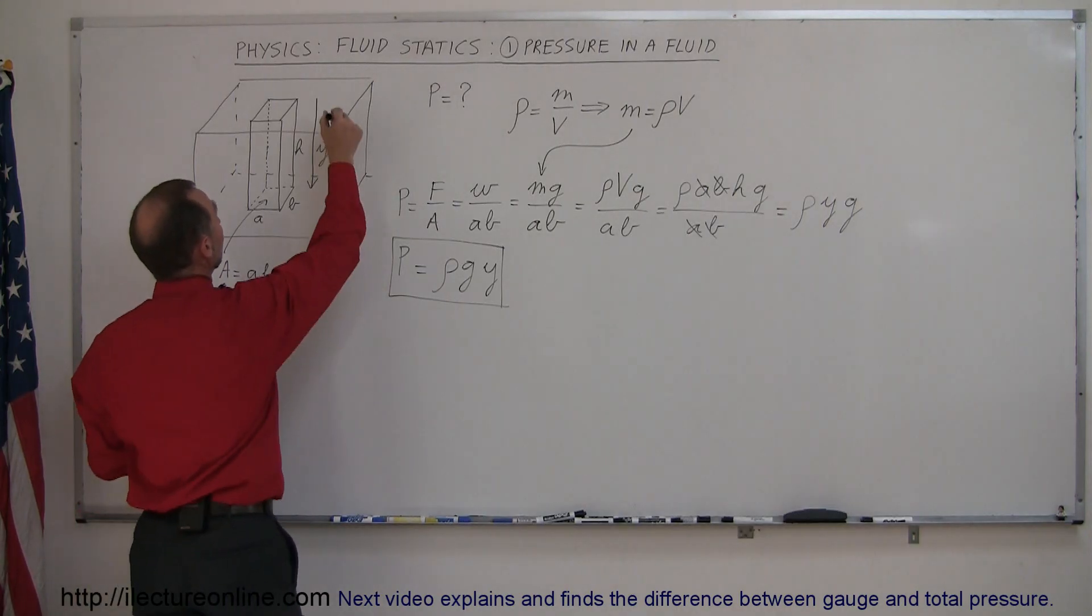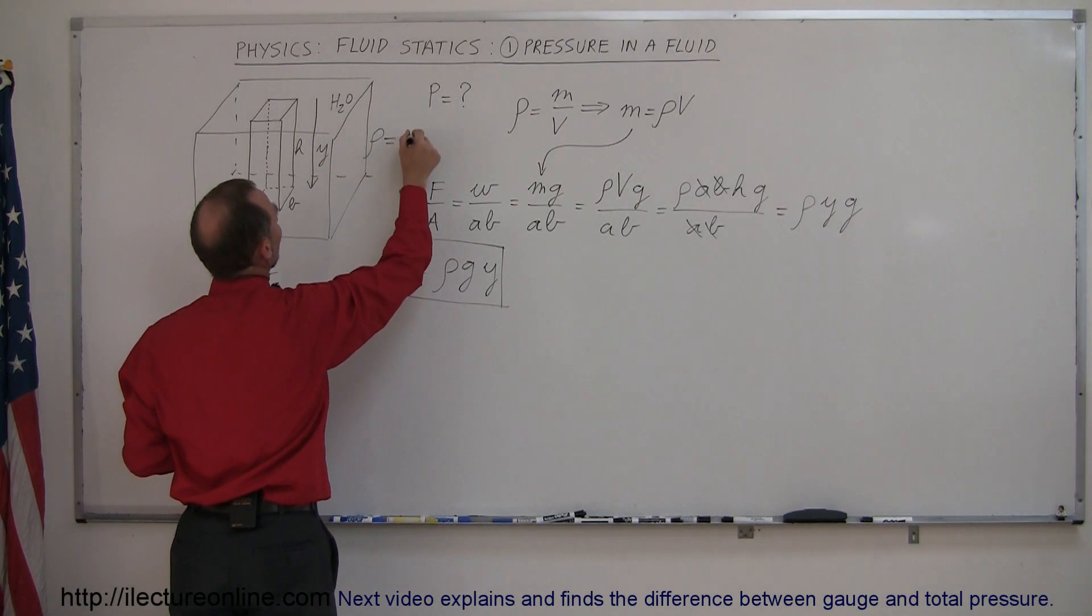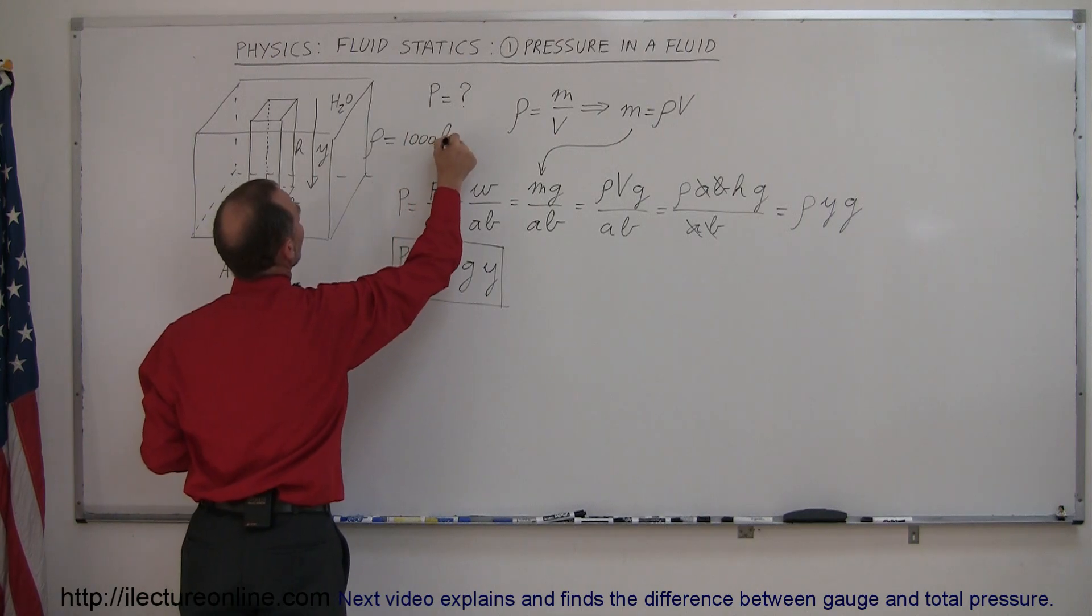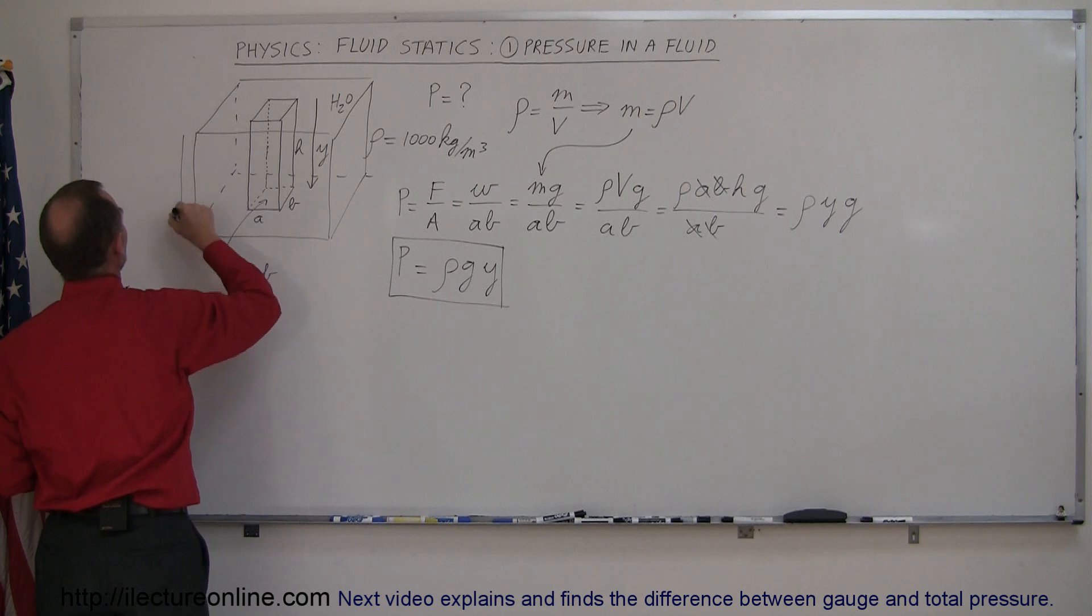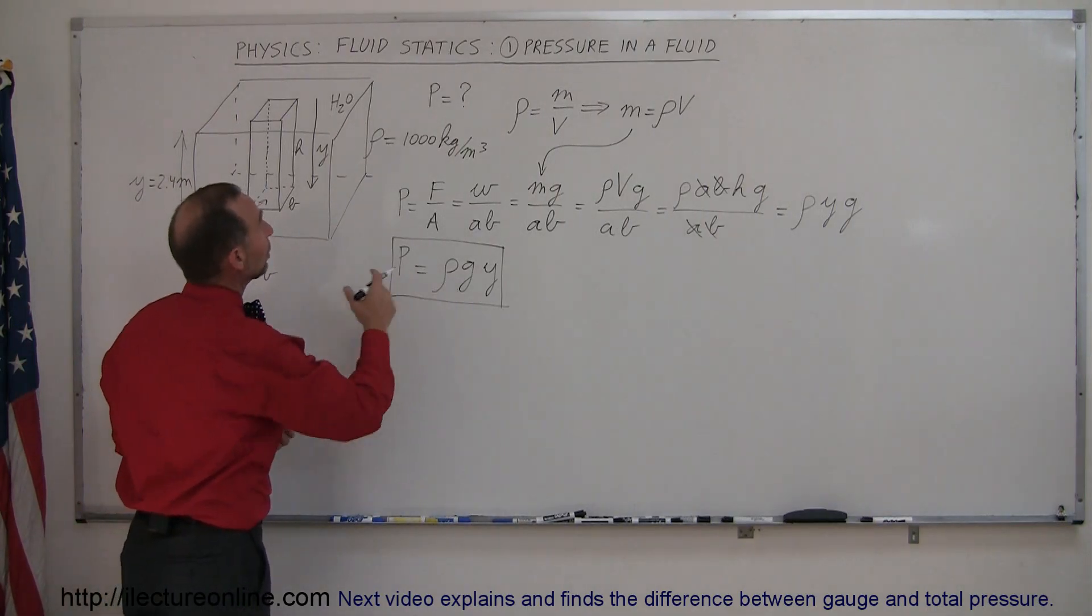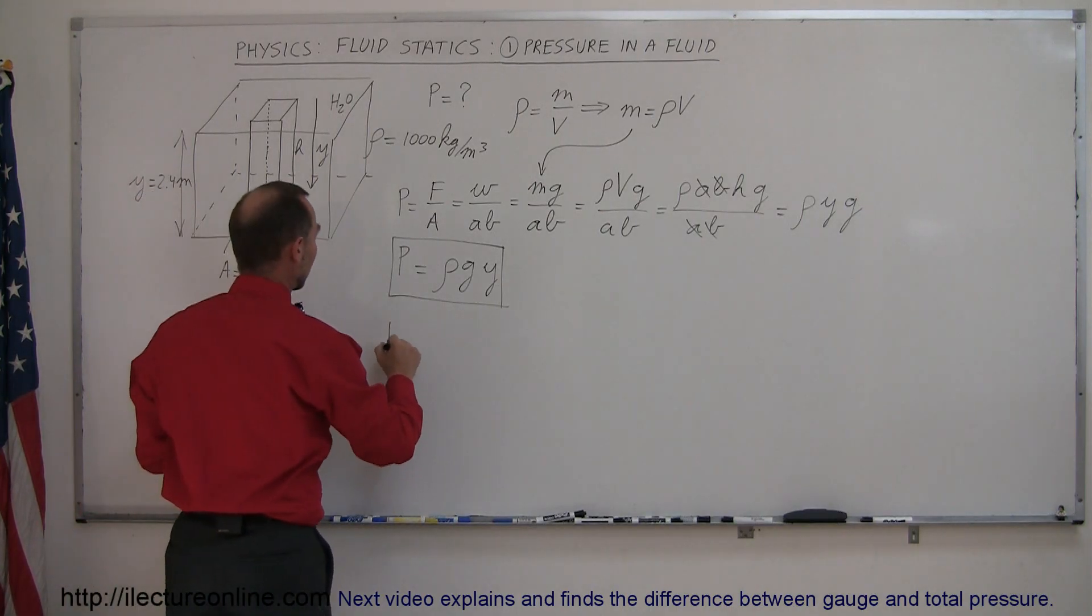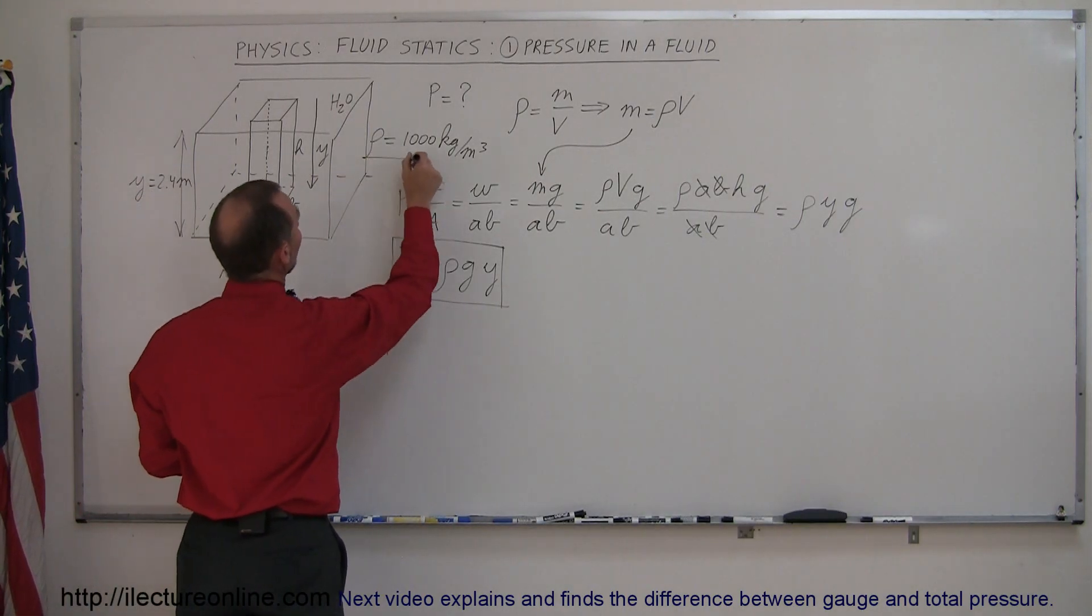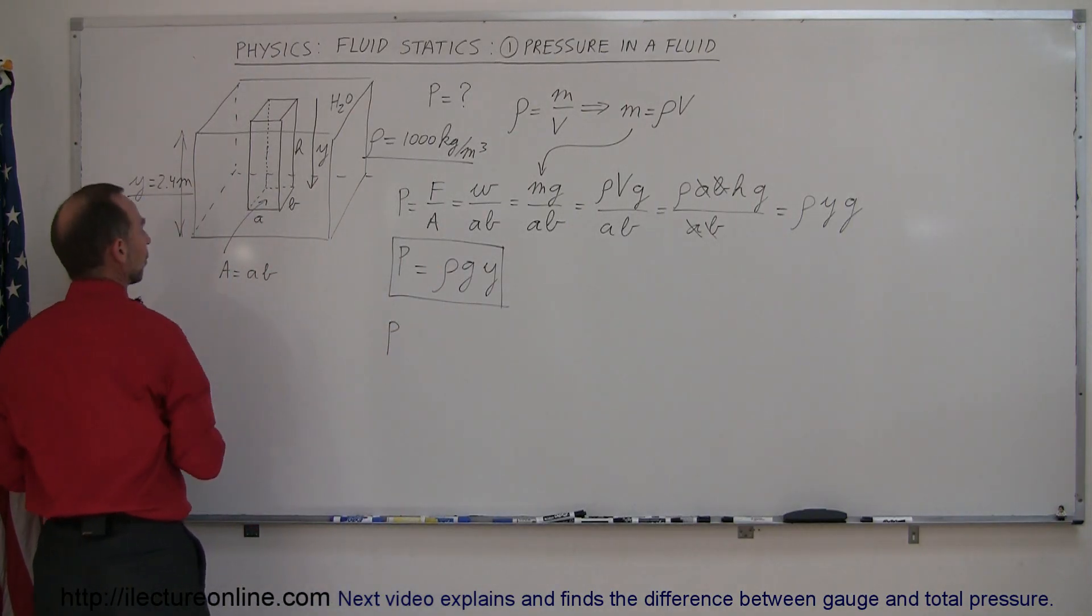Now, as an example, let's say that this is water, and therefore the density is equal to 1,000 kilograms per cubic meter. Let's say that the pool has a depth of 2.4 meters. That means that Y is equal to 2.4 meters. And let's see, what else do we need? G, we know what G is, that's 9.8 meters per second squared. So in this case, the pressure, when we assume that the density is 1,000 kilograms per cubic meter, and the depth of the pool is 2.4 meters,